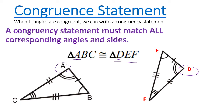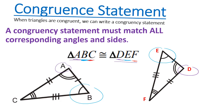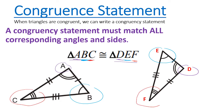Looking at the congruency statement, angle B and angle E should be congruent — they both have that one arc. Angle C and angle F also have three congruence marks each. So with your congruency statement you should be able to tell which angles are congruent without even looking at the triangles, and it also works for the sides as well.